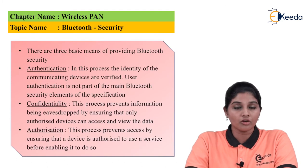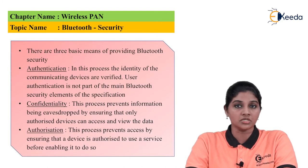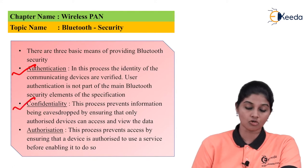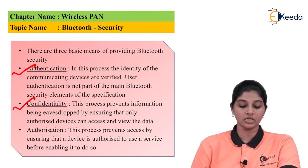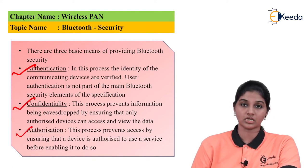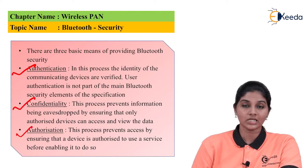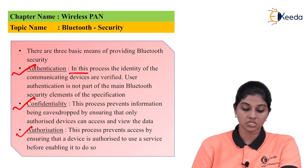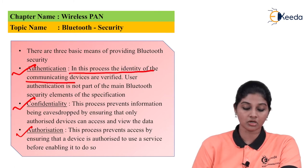Bluetooth security is provided using three main elements. The first is authentication, the second is confidentiality, and the third is authorization. Authentication is the process to identify the communication device.